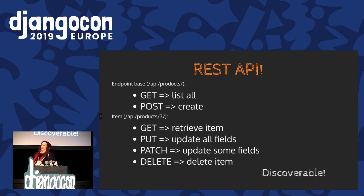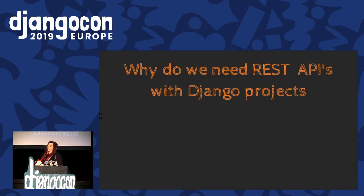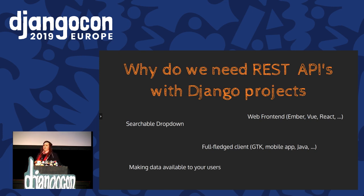If you talk to people who like REST a lot and they want you to have what they call a RESTful API, they will tell you that it's very important that your API is discoverable. We will come back to that a bit later. So why do we need REST APIs as a Django project? After all, what we want to do is display web pages. But you sometimes want APIs to add advanced components on your page, or you want to make your data available to third-party applications.